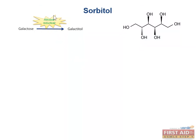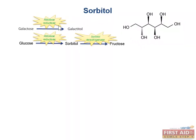Now, as promised, we're going to see our aldose reductase come back again in our discussion about sorbitol. Sorbitol, which is shown here, is basically a reduced form of glucose formed by the enzyme aldose reductase — the same enzyme that converts galactose to galactitol. Sorbitol is formed to trap glucose inside cells, and this trapped glucose can then be converted later to fructose via sorbitol dehydrogenase.